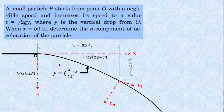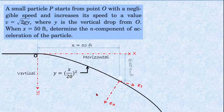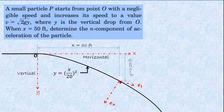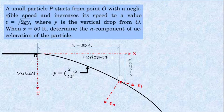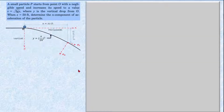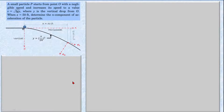At x equals 50 feet, we can simply substitute this value into the function for y. So y = (50/20)², which gives us y = 6.25 feet. The question asks us to evaluate the normal acceleration at this coordinate point, that is at x = 50 feet and y = 6.25 feet.